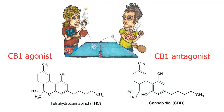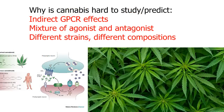The other major cannabinoid found in pot is CBD, which blocks the receptors without producing a signal to the cell. That means it's an antagonist — it opposes the actions of agonists like THC. It also has no detectable psychoactive effects. The mixture of agonist and antagonist, and the nature of cannabinoid signaling as a modifier of other signals, means that the health effects of cannabis are hard to study, somewhat unpredictable, and paradoxical from one situation to the next.